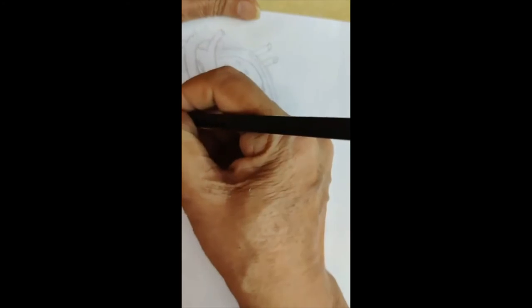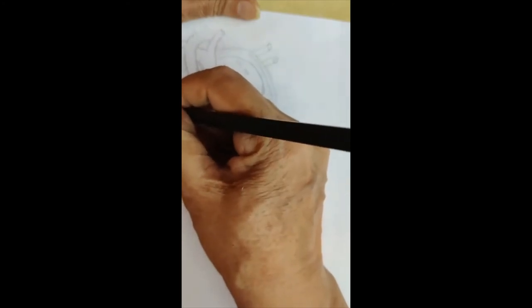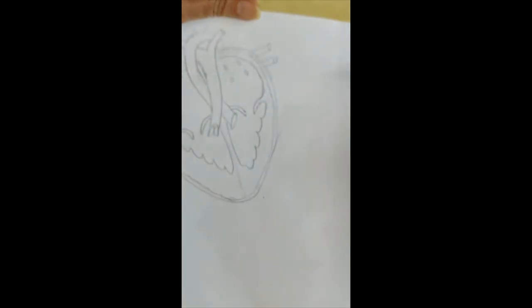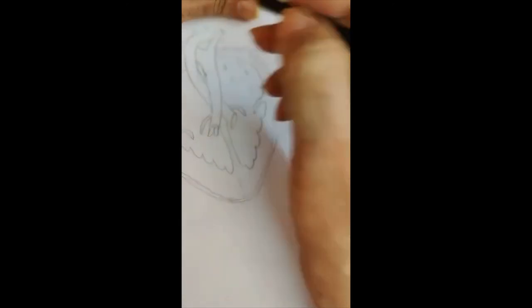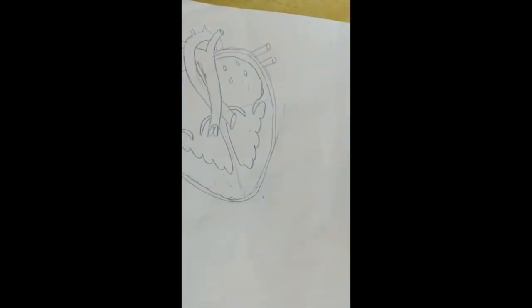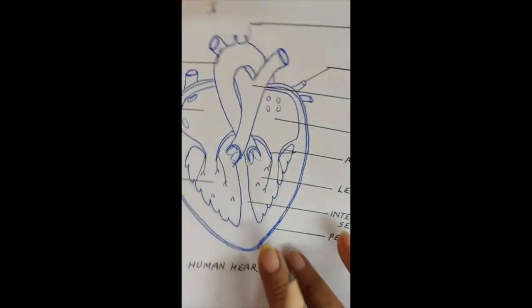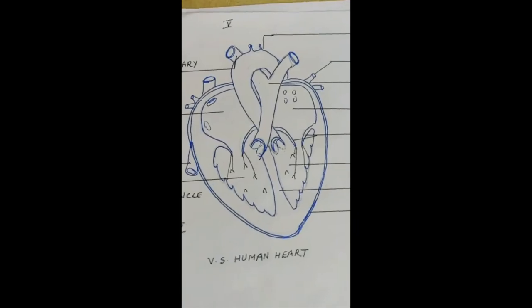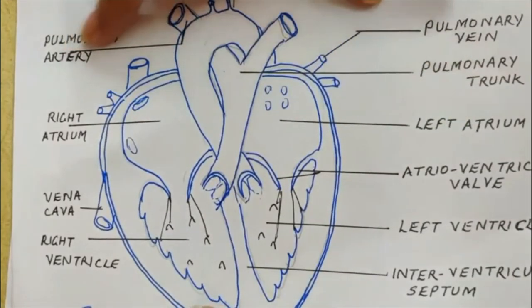These are the inlets to vena cava. These I've already shown. So your heart diagram is complete. Now you have to show the labeling. So labeling I've done for you. I've shown you the pulmonary artery.